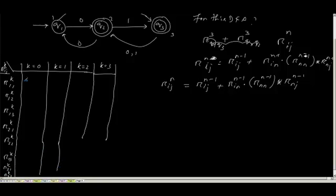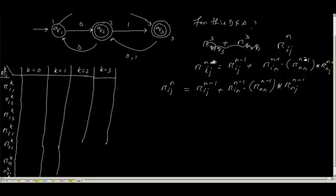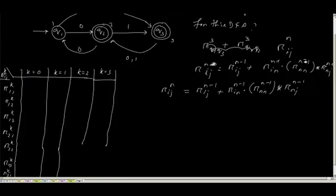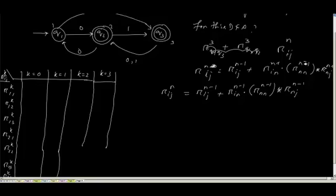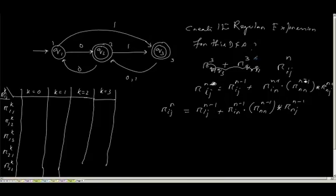So let me ask you. For k is equal to 0, what will be my R11k? So we fill like this way. We start from k is equal to 0. And we try to fill this table.